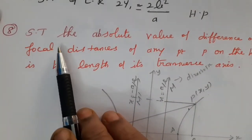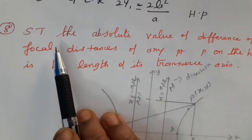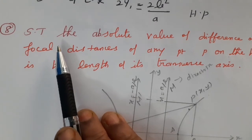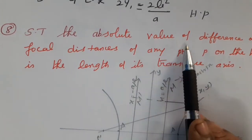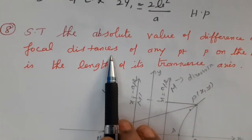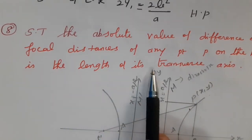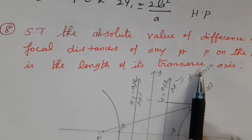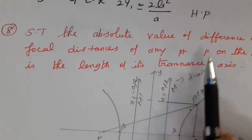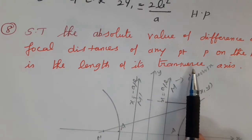Show that — see the 8th question. These two questions are not based on the hyperbola, parabola, and ellipse directly; they are prove-the-result type questions. Show that the absolute value of the difference of the focal distances of any point P on the hyperbola is the length of its transverse axis.